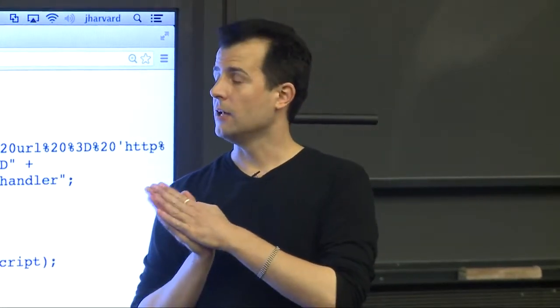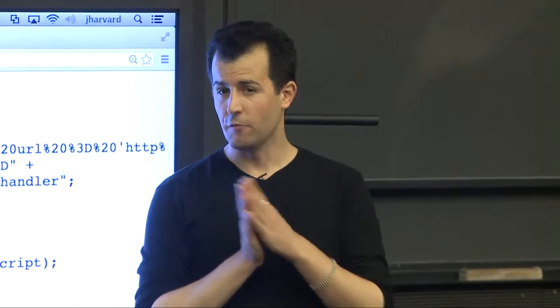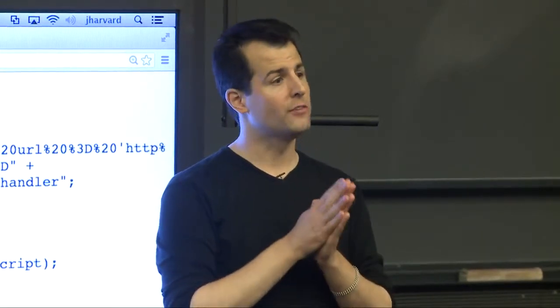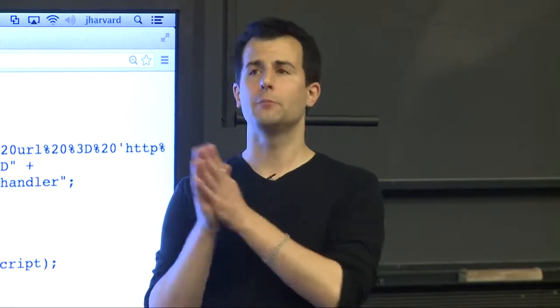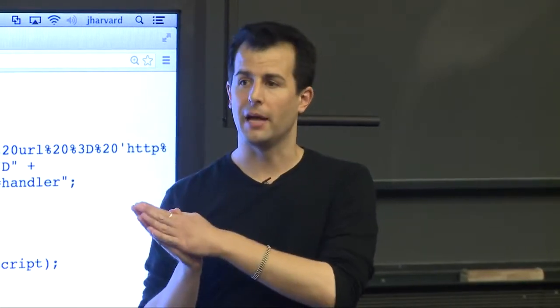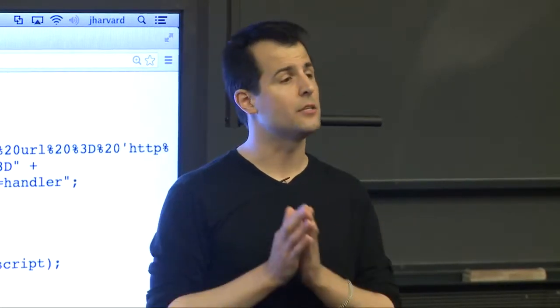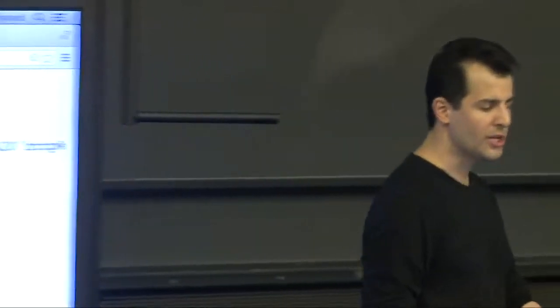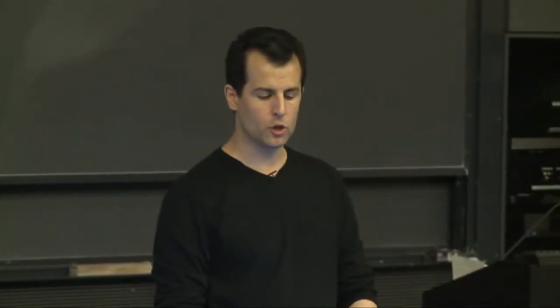Some companies allow you to grab their data via JSONP format, JavaScript object notation padded format. This is just a fancy way of saying it's a different type of JSON. We've seen JSON briefly in the browser, but it's actually super simple.